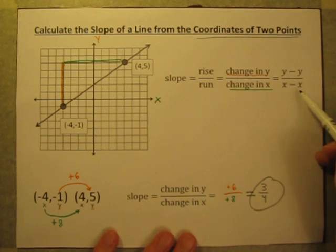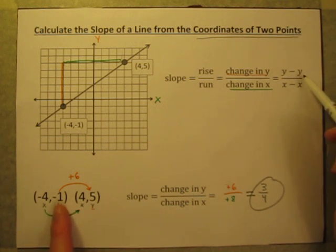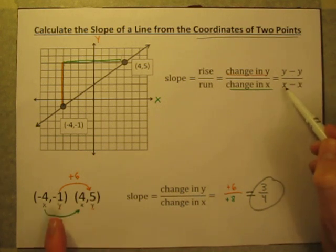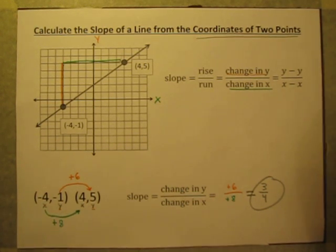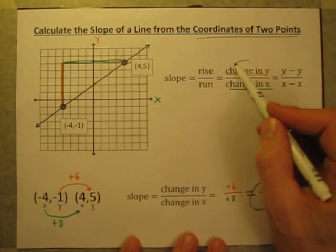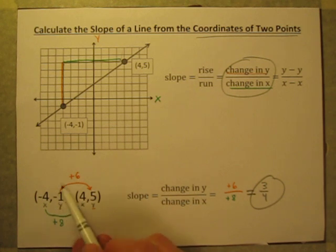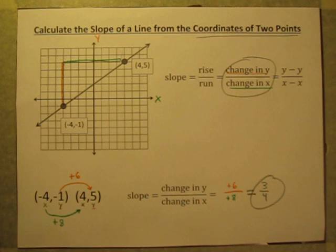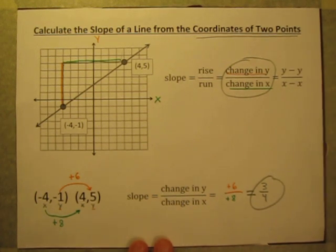I could use another variation of this formula: y minus y divided by x minus x. To do that I would subtract the y coordinates — 5 minus negative 1 is 6, and 4 minus negative 4 is positive 8. That works fine. I happen to think though that thinking of it in terms of how the numbers are changing makes more sense, and my students often get that correct more often than just trying to mindlessly plug numbers into some formula.